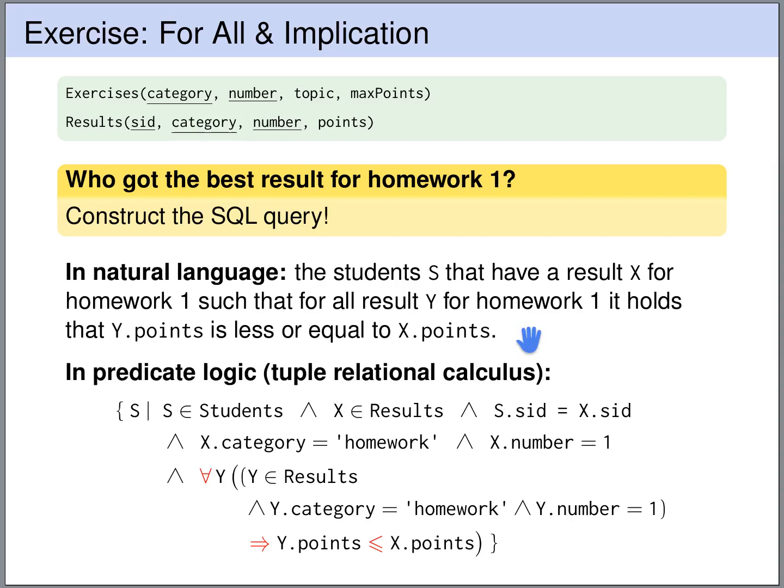So here we have translated this query to predicate logic. We say we want a set of all s such that s is a student and there is a result x. This result belongs to the student, so the sid of x matches the sid of s. It is a homework result and it is a result for homework 1.